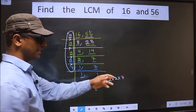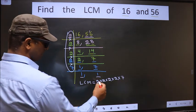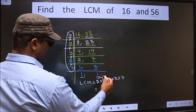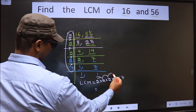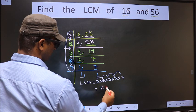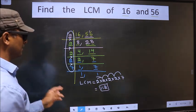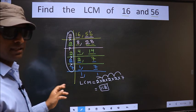Let us multiply these numbers, that is 2 into 2 is 4, into 2 is 8, into 2 is 16, into 7 is 112. This is our LCM. Am I clear?